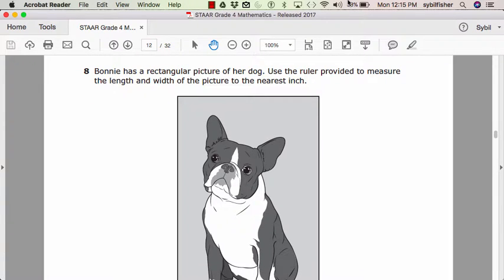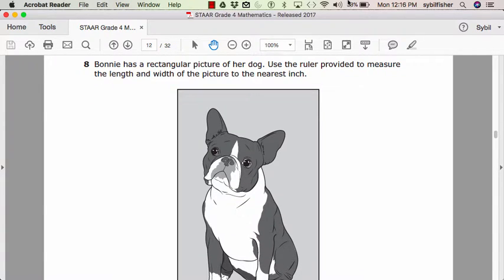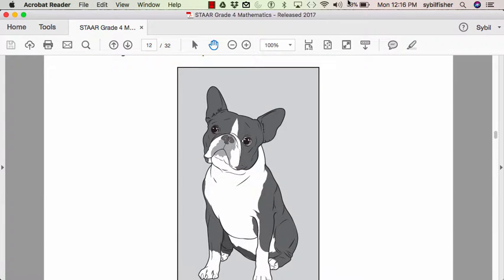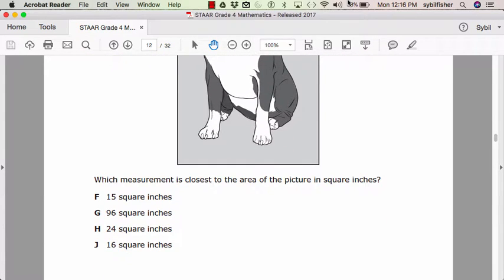Bonnie has a rectangular picture of her dog. Use the ruler provided to measure the length and width of the picture to the nearest inch. Which measurement is closest to the area of the picture in square inches? F, fifteen square inches. G, ninety-six square inches. H, twenty-four square inches. J, sixteen square inches.